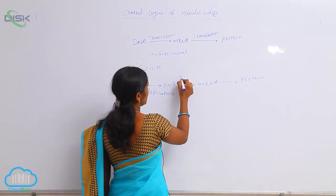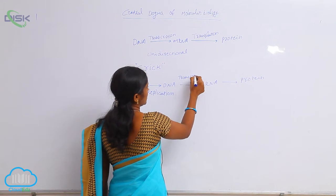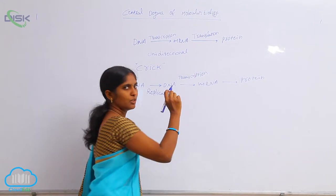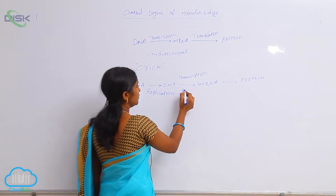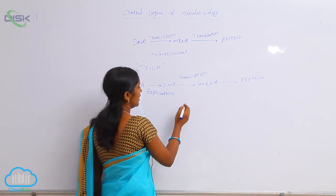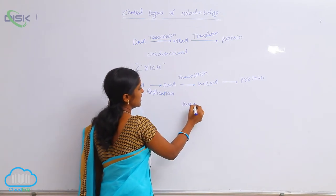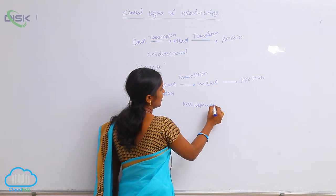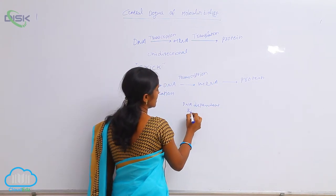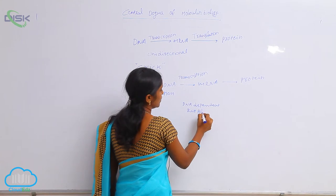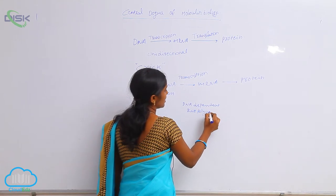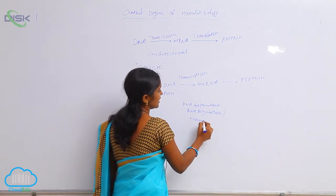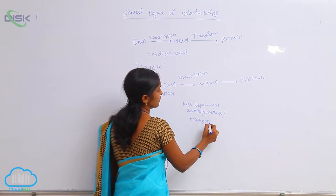In transcription, the enzyme involved is DNA-dependent RNA polymerase. DNA-dependent RNA polymerase is involved, and it is also called transcriptase.